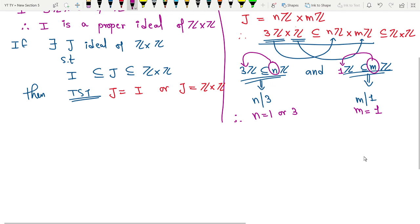So there are 2 cases that I can observe. Case 1 is considering n equal to 1 and m has only 1 choice, so 1. In that case, J is same as Z×Z because in the place of both I write. So this condition is true in that case. We are done.